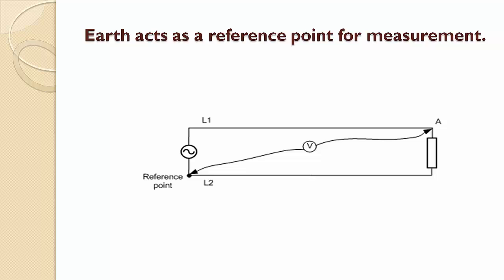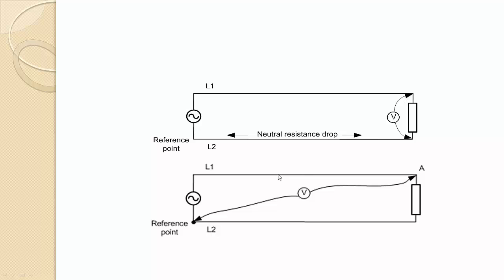First thing is, Earth acts as a reference point for measurement. Consider the power supply shown in the figure. To find the voltage at any point, for example the point A, we have to fix a reference point. And we can measure the voltage at the point A with respect to this reference point. Now it is possible we can fix the reference point as a point on the circuit itself. For example, we can fix one of the terminals of the power supply as a reference point.